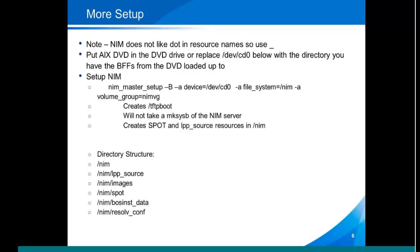We're going to do the easy NIM version of NIM master setup. Basically what we're telling it to do with the command entered here — if you look here, you'll see this one — we're basically telling it that we're going to set up NIM. We're going to take everything from the CD and put it in the filesystem /NIM, which happens to be in the volume group NIMVG. If those aren't there, it will create them. It will also create the /tftpboot filesystem and it will create the initial spots and LPP resources in /NIMVG based on whatever DVD you are running the NIM master setup against.